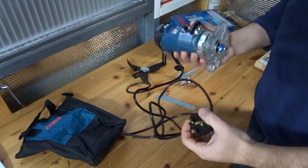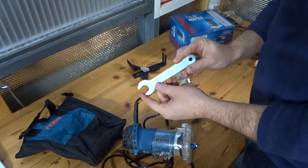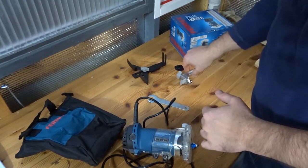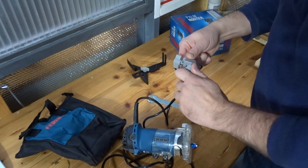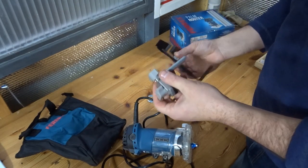So apart from the unit, you also get, as I say, a spanner to change the bits. You get some various add-ons, guides and things. There's two here.